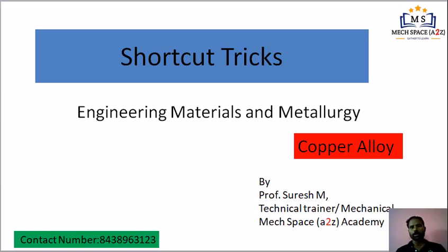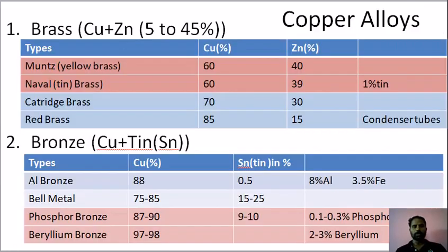Let's take a look at the copper alloy. There are 4 types of copper alloys: brass, bronze, cupronickel, and gunmetal.